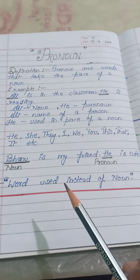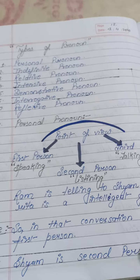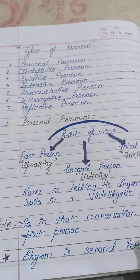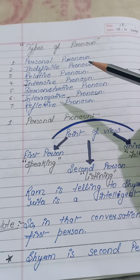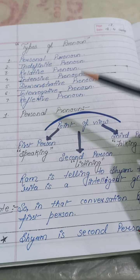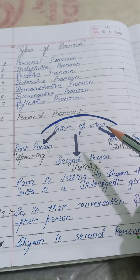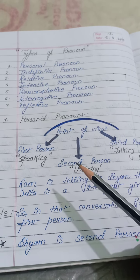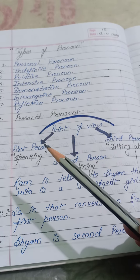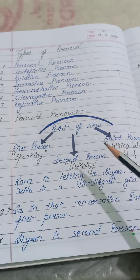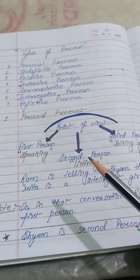Jo shabd noun ki jaga pe upyog kiya jata hai, woh pronoun kehlata hai. Now let's talk about the types of pronoun. Our first type is personal pronoun. In personal pronoun, we can talk about point of view. In point of view, there is a first person, second person, and third person.